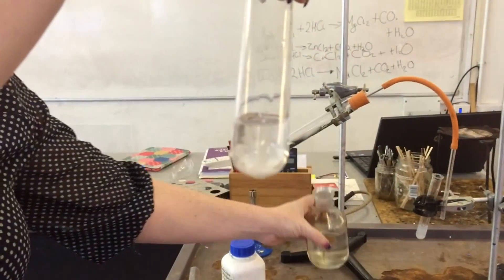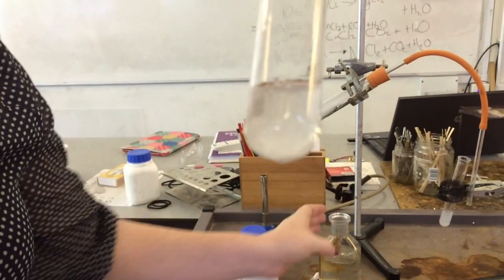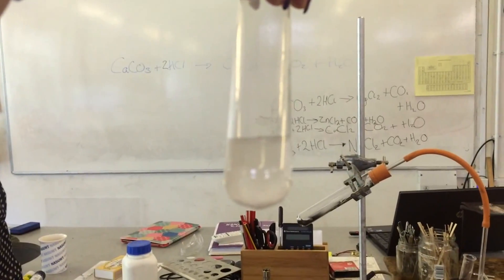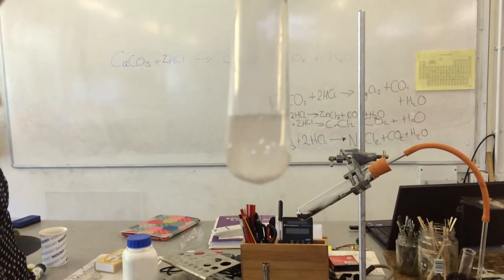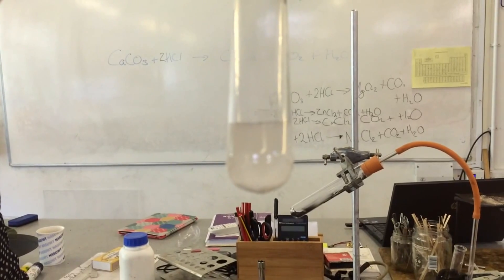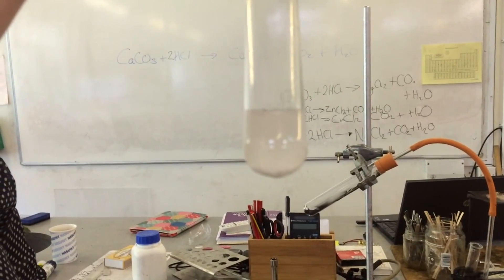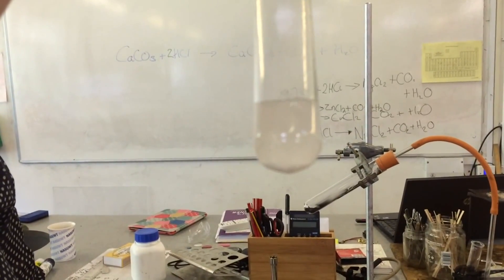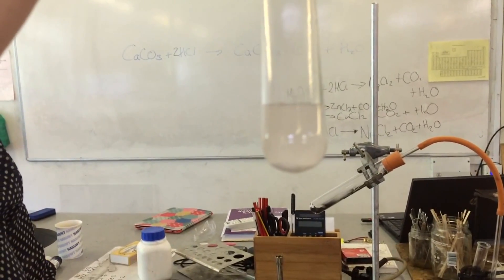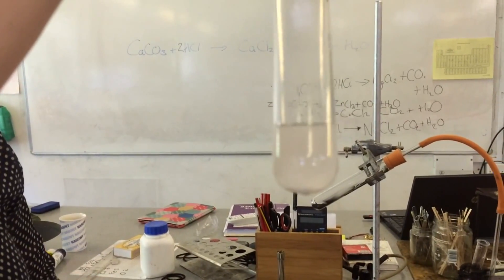Straight away we can see that there is fizzing going on and a gas is being produced. The calcium carbonate is turning into calcium chloride, carbon dioxide and water. This is a really, really quick reaction that goes on.